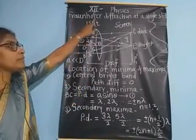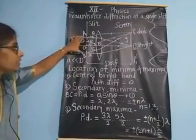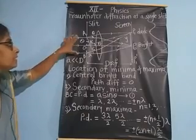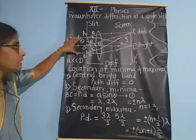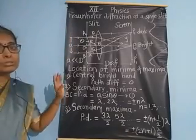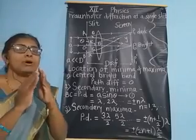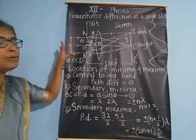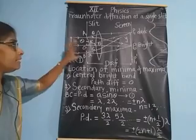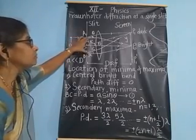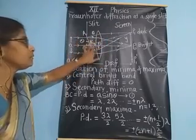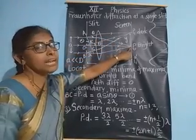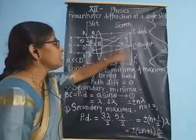We will now take Fraunhofer diffraction at a single slit in detail. Here is a slit AB whose width is small a. A plane wavefront is incident on the slit, coming from a source kept at the focus of a biconvex lens. After passing through the slit, another convex lens placed in front of the slit converges all rays on the screen at point P0.